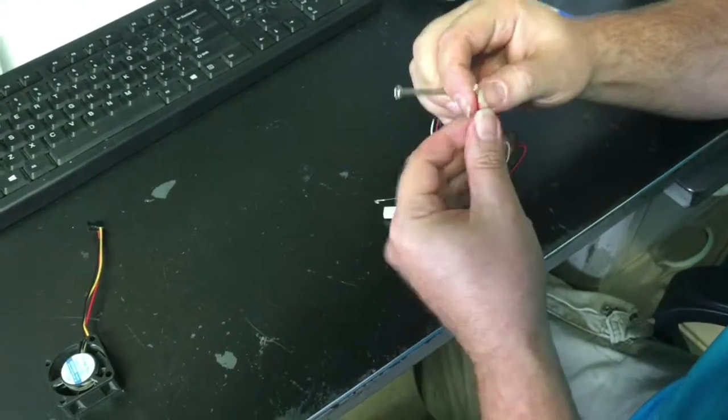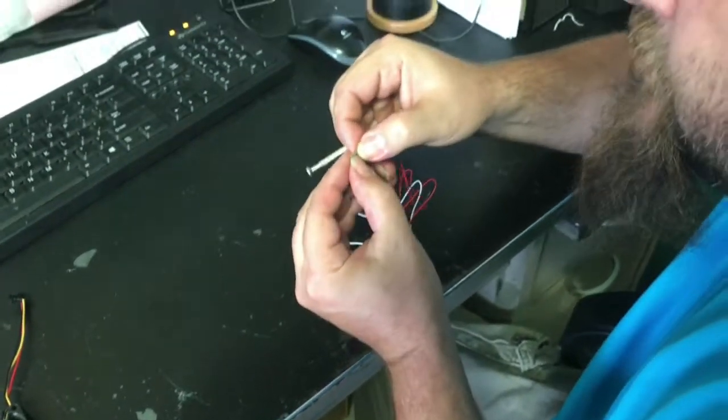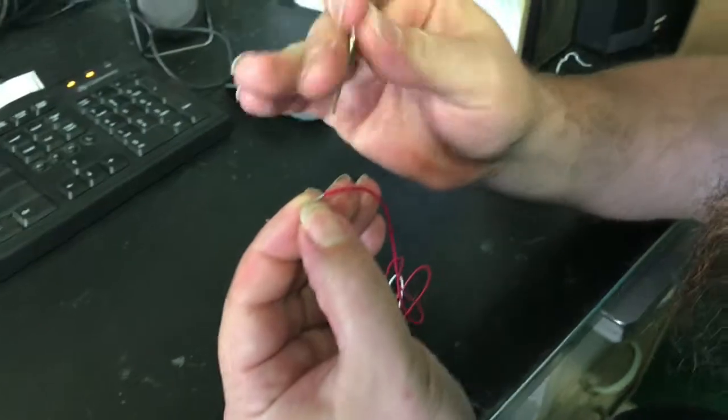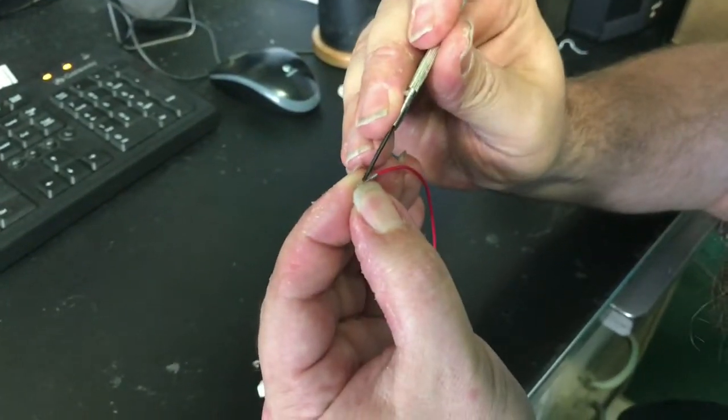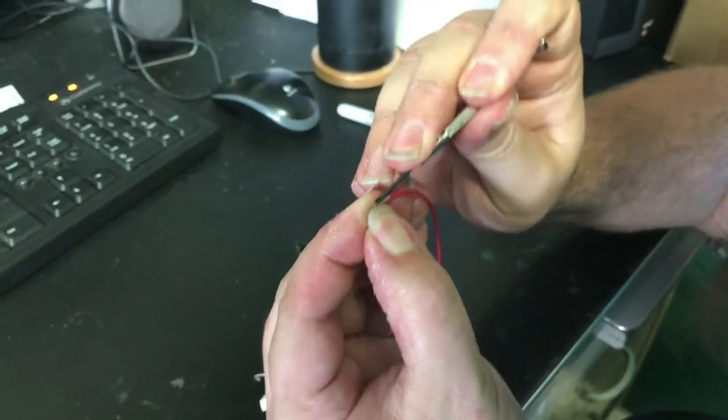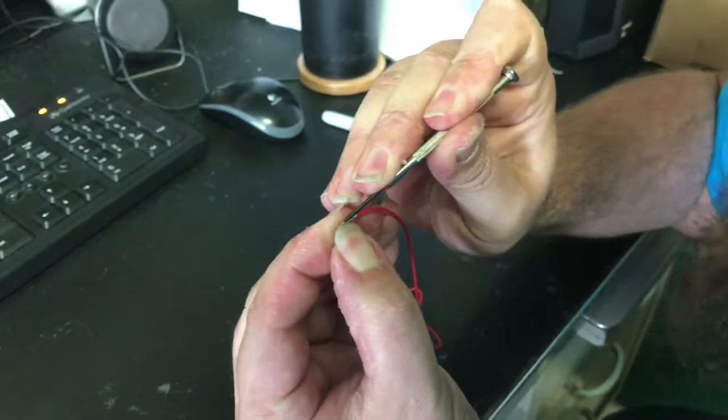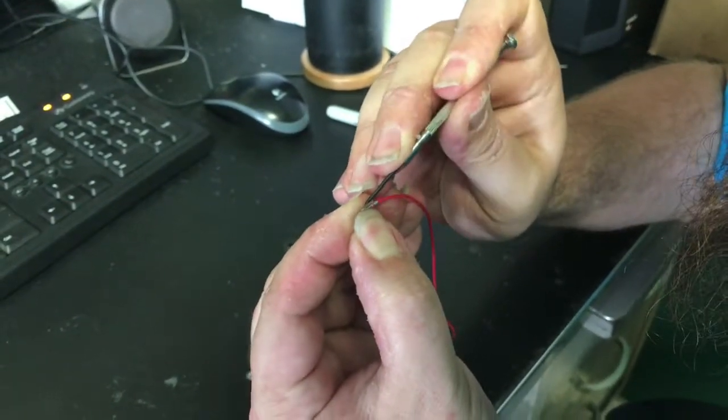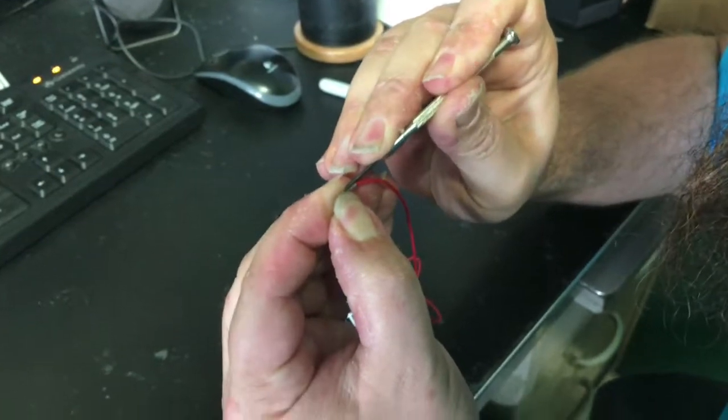Alright, after you get it out—I don't know if John can zoom in on this—there's a little bitty tab. That's the piece that you pressed on, and you're going to want to bend that back up a little bit so it locks into the connector whenever you put it back together.